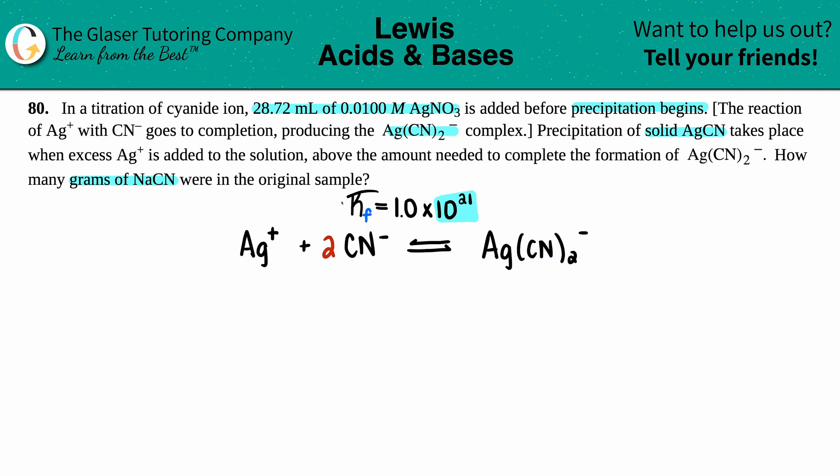Now, just going back to what we said before, remember the KF means that if it's a really, really high number, that means at equilibrium, you're going to have mostly your products, which means that all of these, chances are, if it's in the right proportion, you're going to have very, very, very low amounts of reactants and all of it is going to be your products.